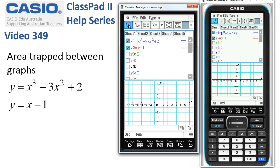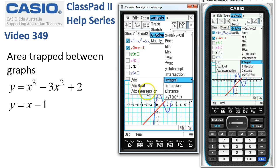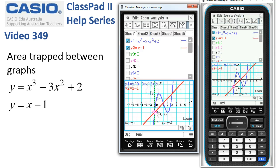We graph them in the normal way and adjust the view window wherever necessary so we can see the two functions. Then tap on to analysis, g-solve integral. And because we've got two functions here, the intersection option is there.